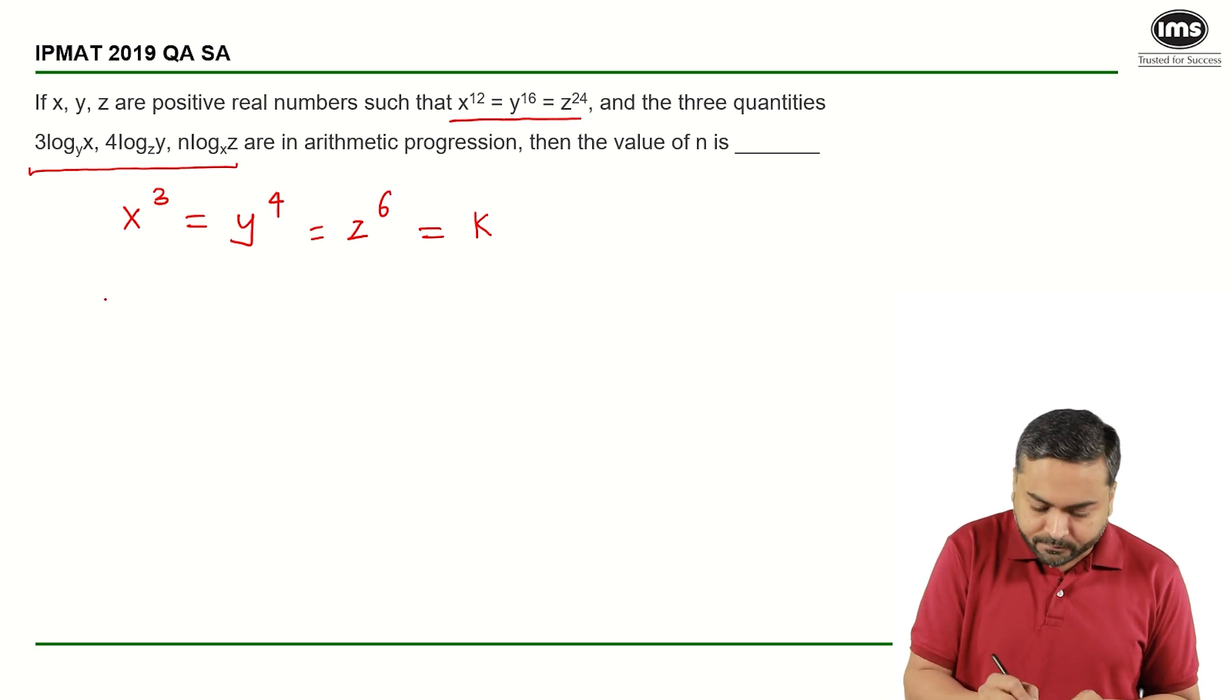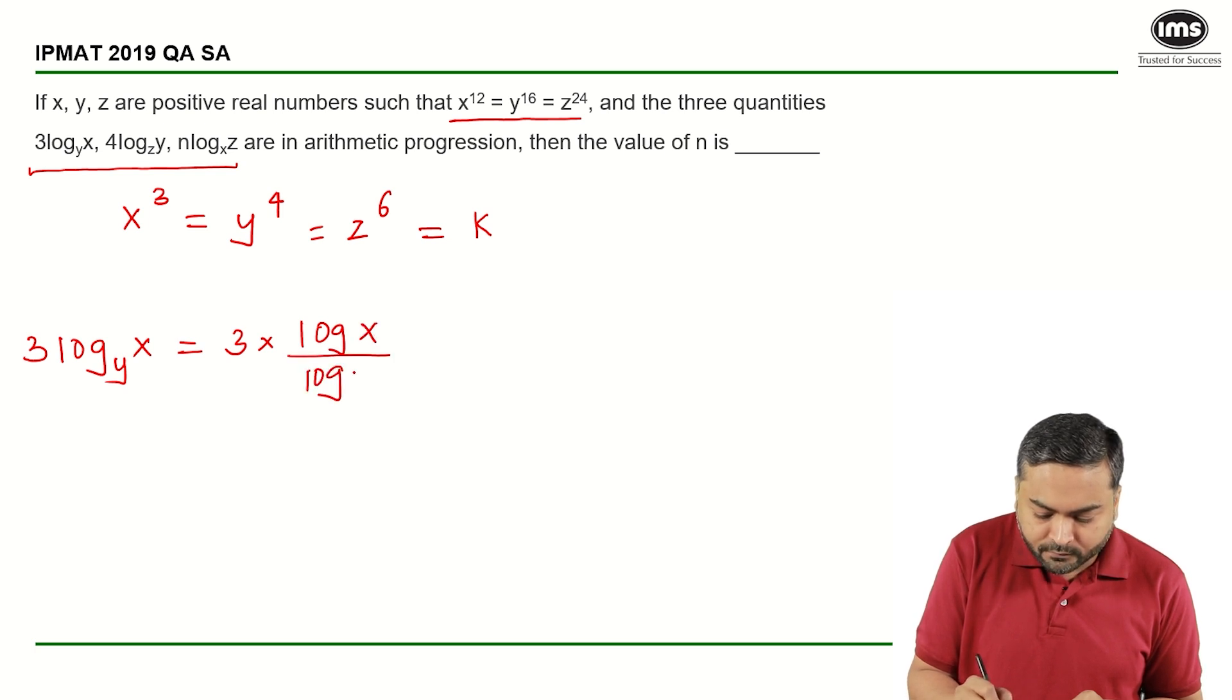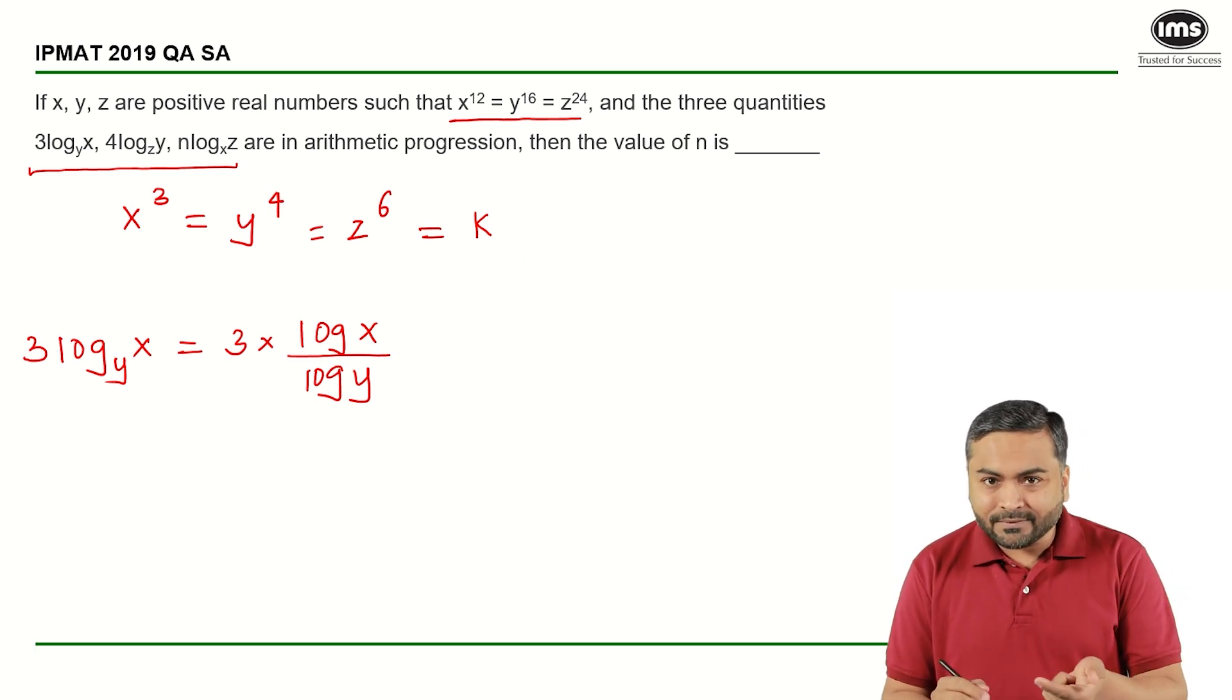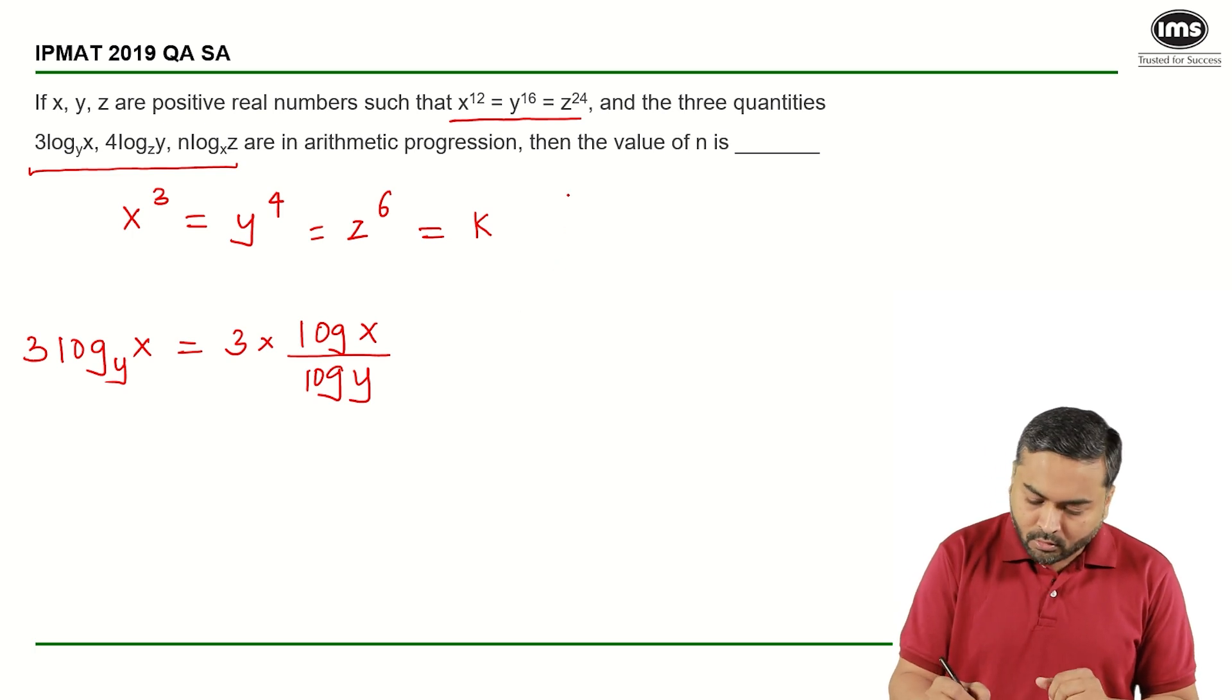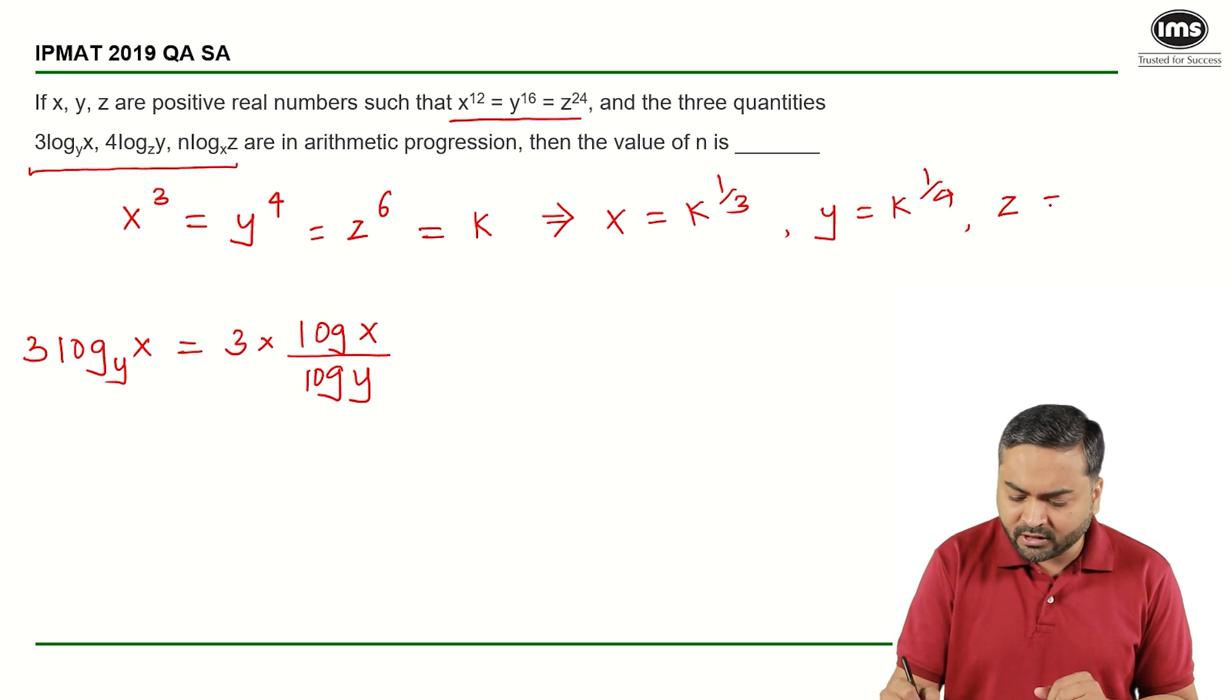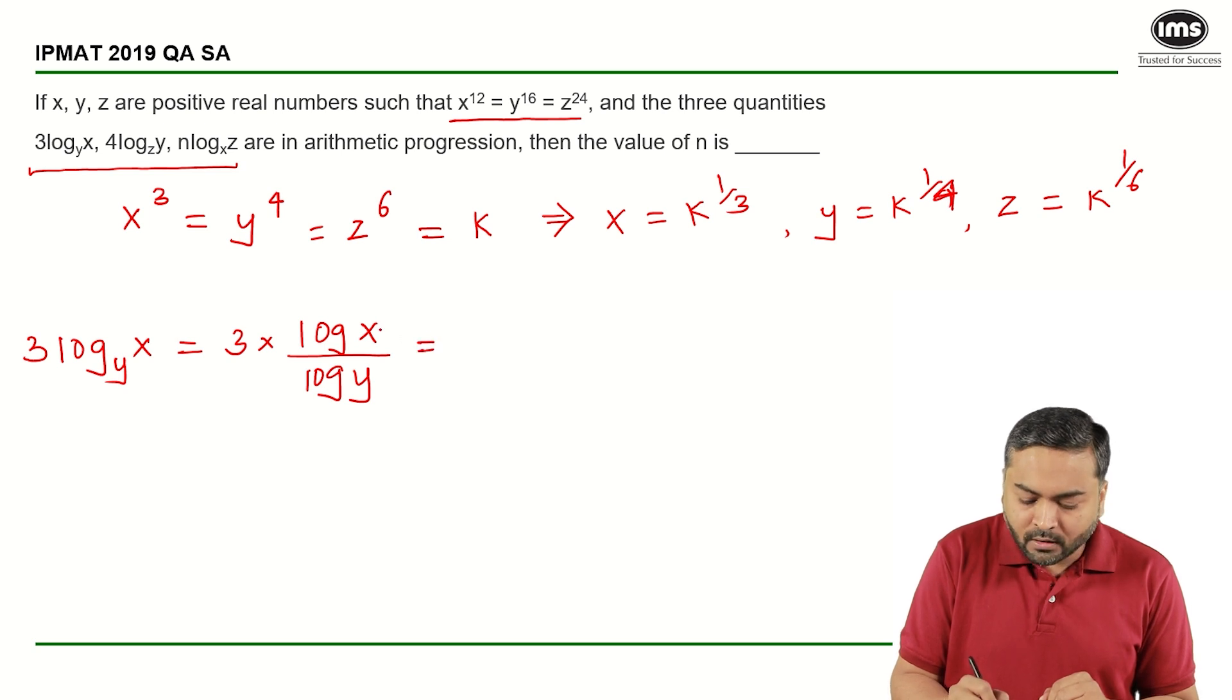So here if I have 3 log x to the base y, I can say this is 3 times log x upon log y. Now I can get the value of x and y from the above expression. From here I can say that x equals k raised to 1 by 3, y equals k raised to 1 by 4, and let us also find out z is nothing but k raised to 1 upon 6.